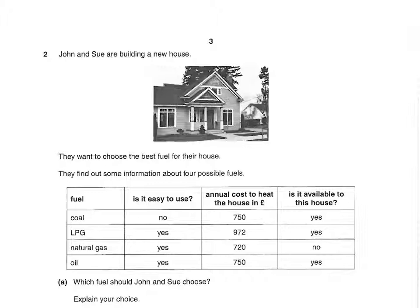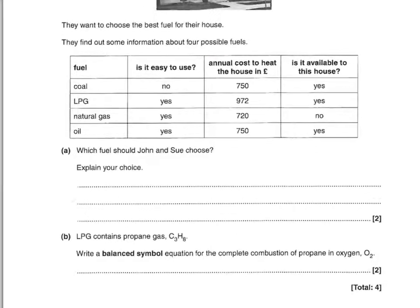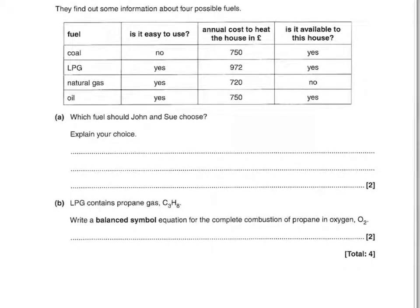John and Sue are building a new house and want to choose the best fuel. Which fuel should they choose? You don't get a mark for the fuel itself, but the choice is oil — you get two marks for explaining. The first mark is saying oil is easy to use, or coal is not easy to use. The second mark is saying oil is available, or natural gas is not available.